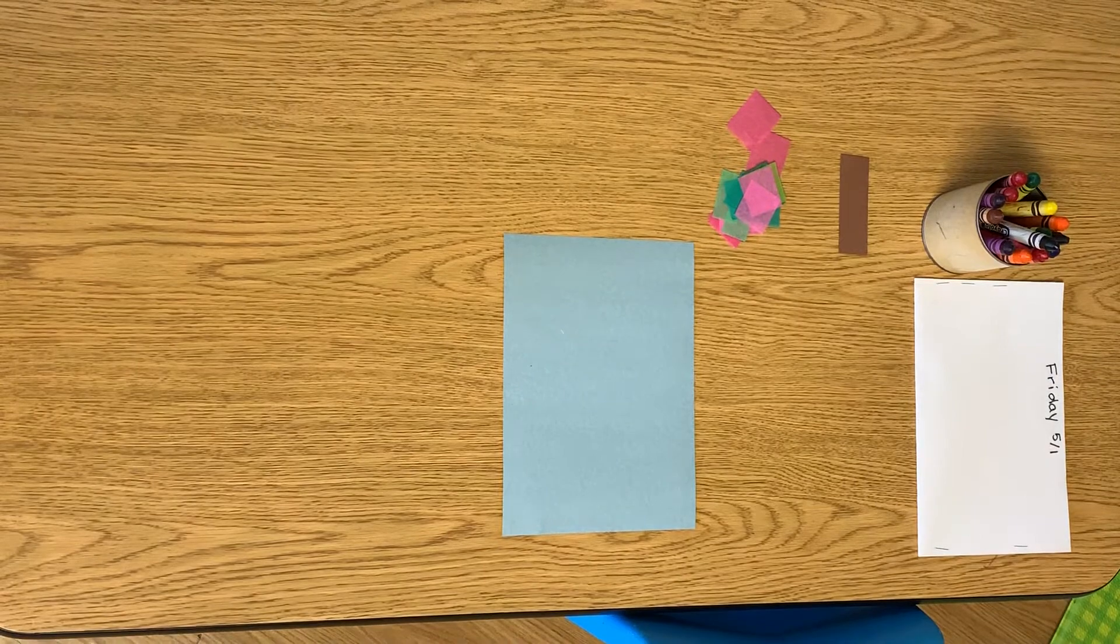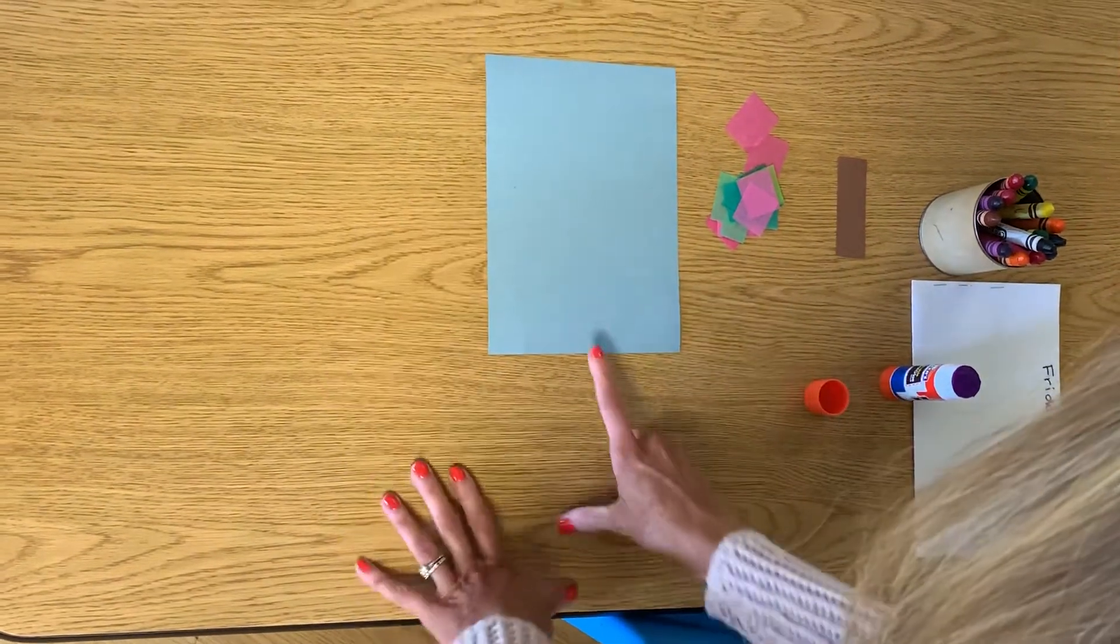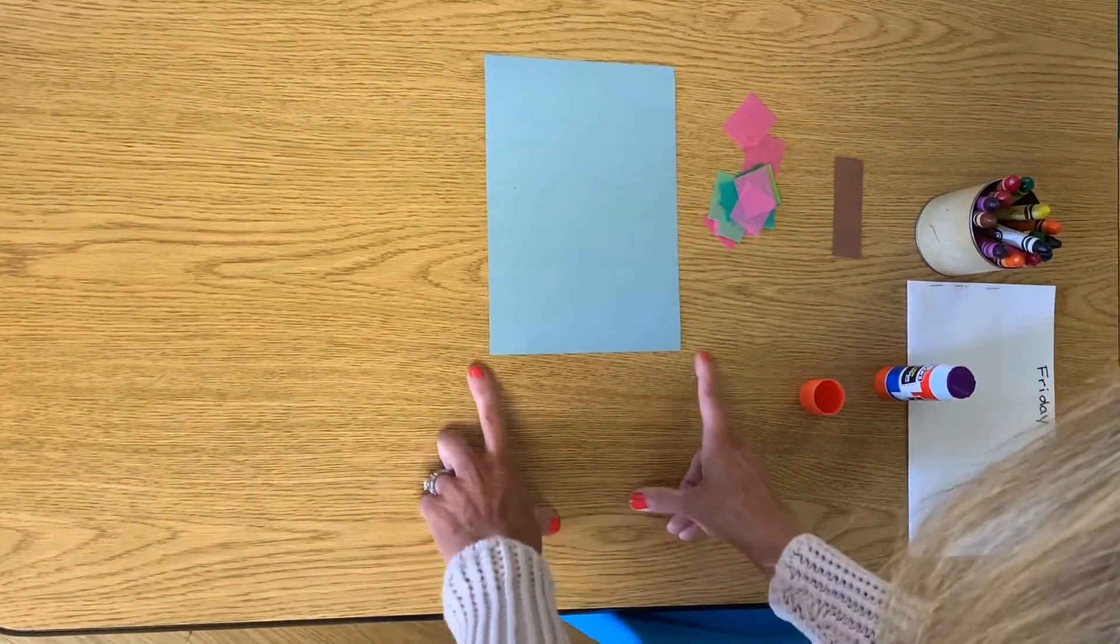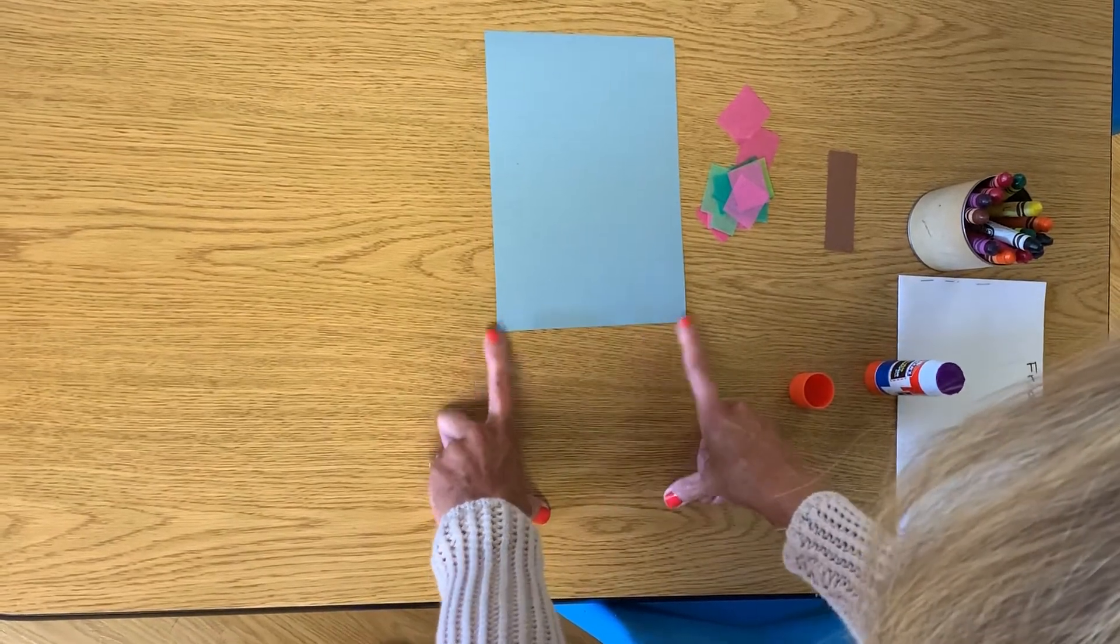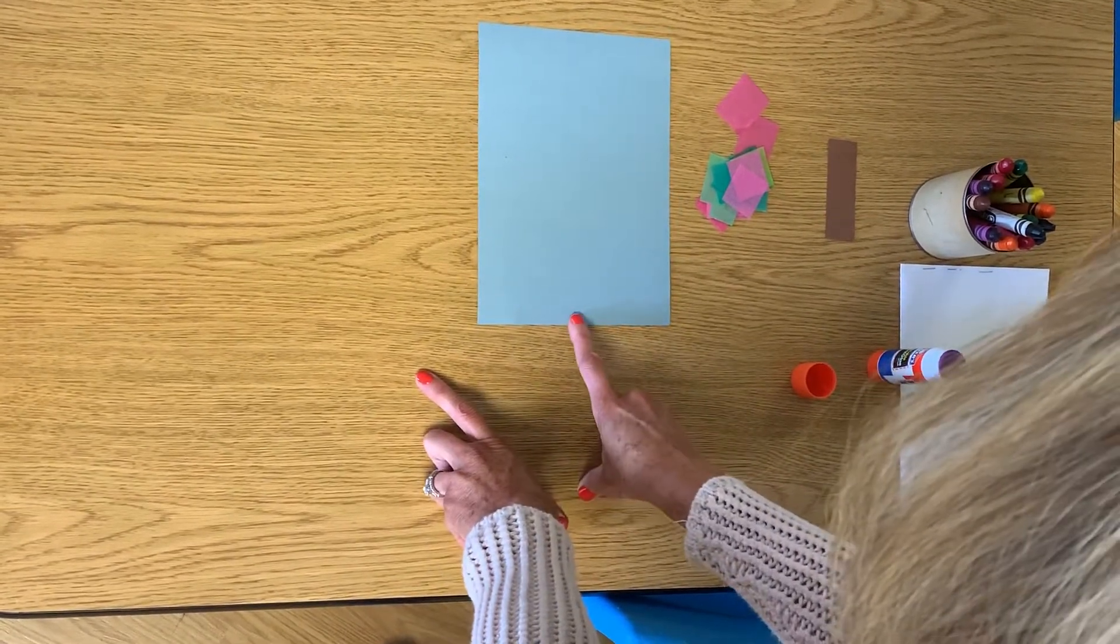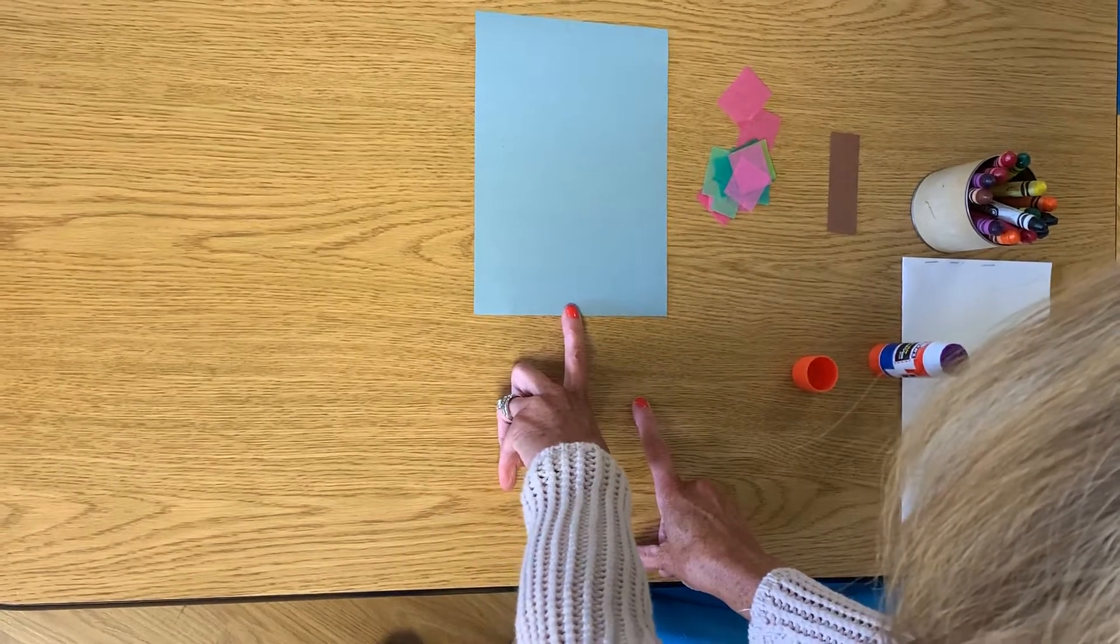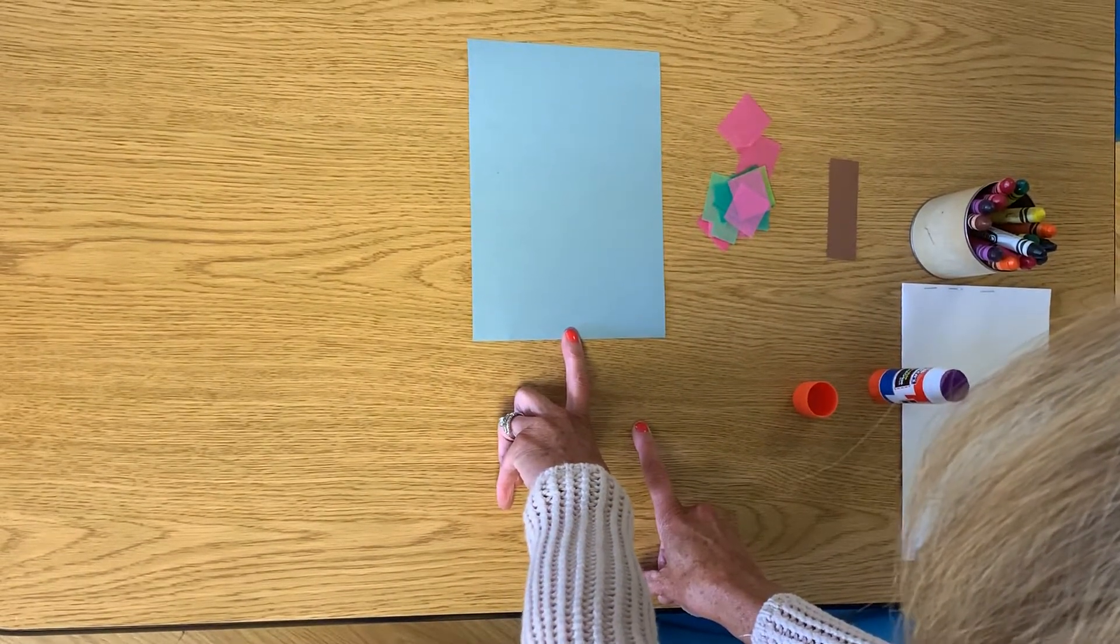And to start, we're going to find the bottom of our paper. So if I'm looking at this paper, I need to find the bottom. So here's the bottom. And then I want to find the middle. So the bottom and right in the middle, so about right here. Can you guys put your finger on your paper in the middle at the bottom?